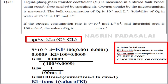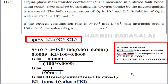The next question: the liquid phase mass transfer coefficient kL is measured in a stirred tank vessel using a steady-state method by sparging gas. The oxygen uptake by the microorganism, bulk concentration of oxygen cL = 10⁻⁴, and solubility of oxygen in water c* = 10⁻³ are given. The oxygen consumption rate qO₂ = 9×10⁻⁴ and interfacial area a = 100 m²/m³. The formula is: qO₂ = kL·a·(c* − cL).